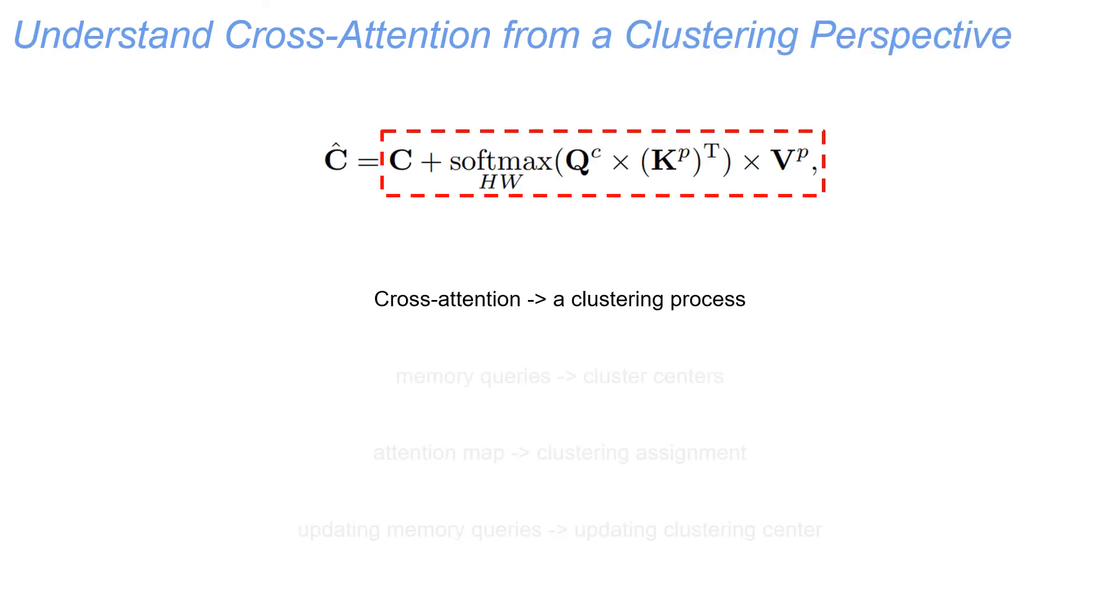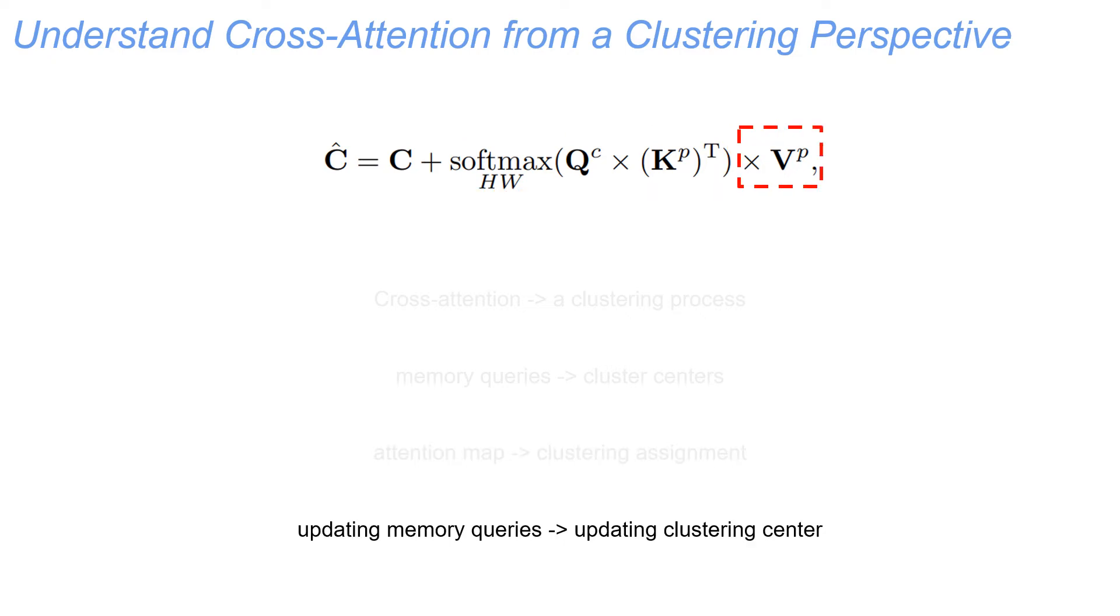Interestingly, we notice that the concept of cross-attention is very similar to clustering. Specifically, we may map the items in cross-attention to clustering as follows. We consider memory queries as cluster centers, each represents mask and class embeddings for an object. Therefore, the generation of attention map can also be regarded as a step of clustering assignment. Similarly, the update of memory queries is also similar to the update of cluster centers.